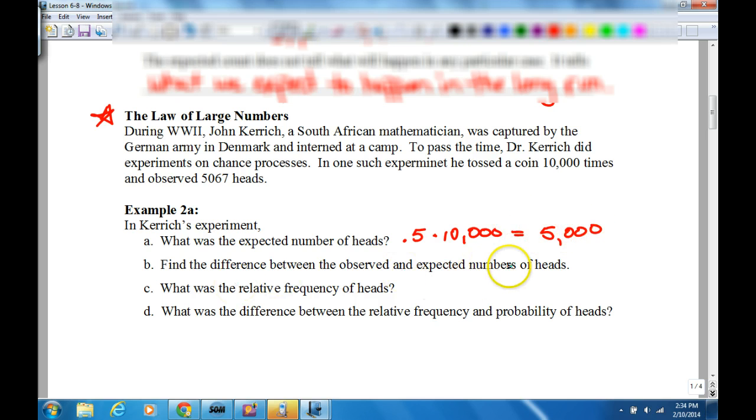Find the difference between the observed and expected number of heads. Yep, 67, because it's 5,067 minus 5,000 equals 67. What was the relative frequency of the heads? Okay, so this is not the expected amount, but the actual amount. So, you're going to have the actual amount over the total tosses. And that equals 0.5067.